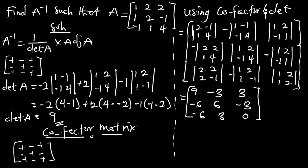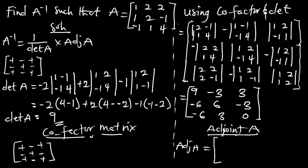Now for the adjoint matrix — we know that the adjoint matrix is the transpose of the cofactor matrix. So the adjoint of A is the cofactor matrix transposed. Transposing gives us: 9, negative 6, negative 6; negative 3, 6, positive 3; and positive 3, negative 3, and 0. This is the adjoint matrix. We have our adjoint matrix and we have our determinant, so we can apply the formula: 1 over the determinant multiplying the adjoint matrix.